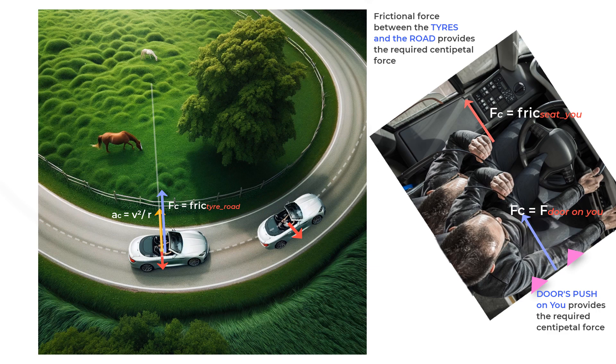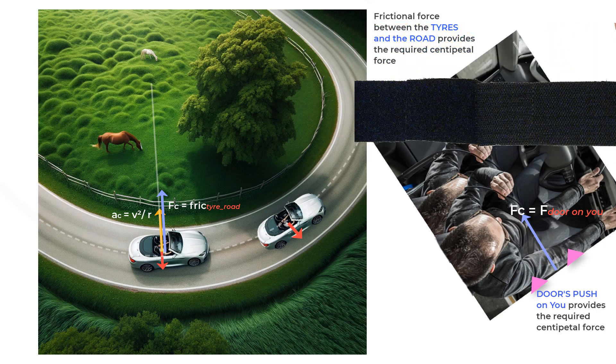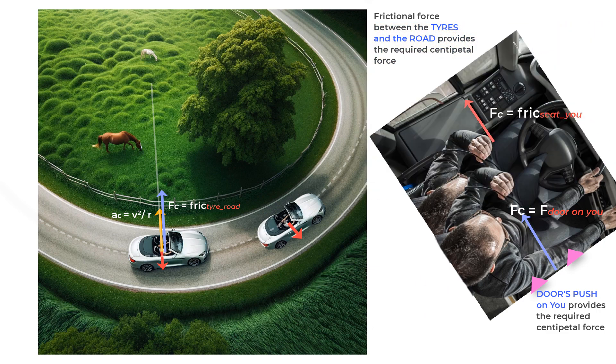In fact, if the friction force between you and the seat was high enough, let us say you were sitting on a velcro seat and your pant kind of formed a velcro lock with the seat, you would have not slid towards the door because you would have got adequate frictional force to provide you the required centripetal force and you would have moved in a circular path with the car.